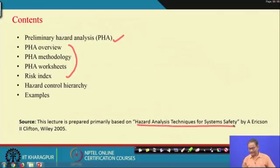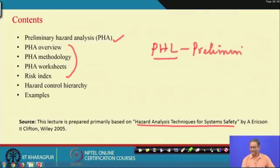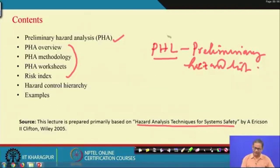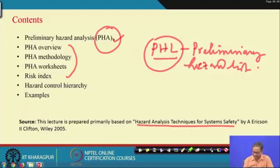The reference book is 'Hazard Analysis Techniques for System Safety.' Please keep in mind that those going through PHA without first reviewing the Preliminary Hazard List (PHL) — my previous lecture — will face problems. I request all of you to first go through PHL and then understand PHA, as PHL is the input to PHA.